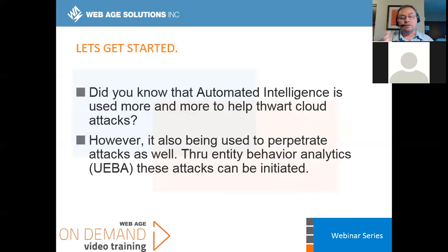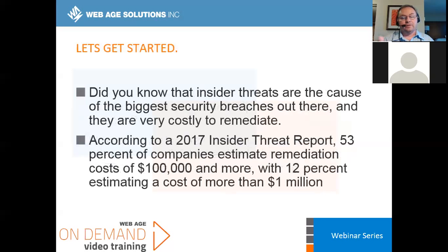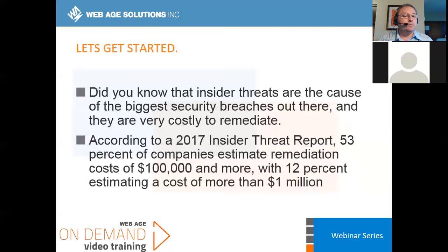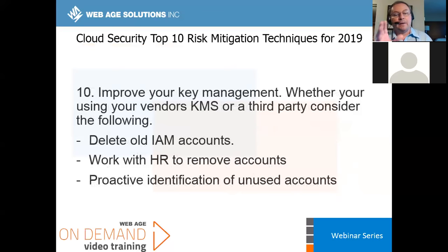There's specific technology analytics called UEBA that could be used to initiate attacks. According to a 2017 insider threat report, 53% of companies estimate remediation costs of $100,000 or more, and 12% estimated a cost of more than $12 million. If you have a data breach, you have a privacy concern, and in the U.S. there are steep penalties — you have to pay for credit monitoring, fines, investigative and legal costs, and there's also the possibility of class action lawsuits. This becomes very, very expensive.